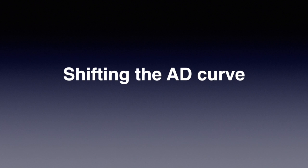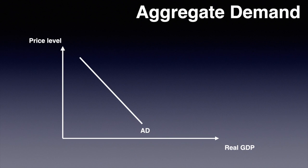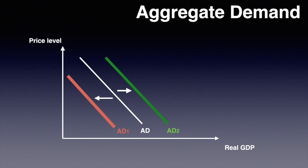In this video we will examine the factors that cause aggregate demand to increase and shift right, or decrease and shift left. Aggregate demand will shift rightwards towards AD2 when increasing and leftwards towards AD1 when decreasing. I've drawn the curves red and green to correspond to the following information on aggregate demand curve shifts.